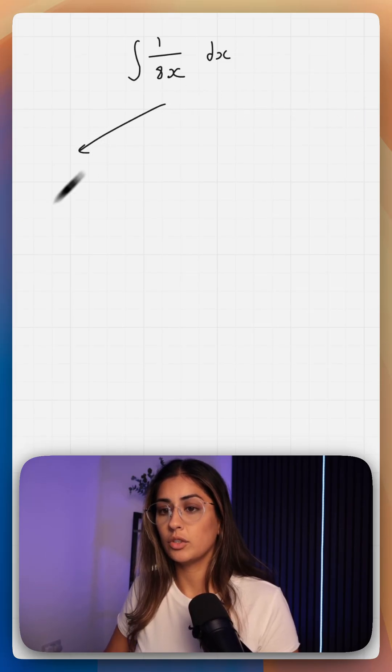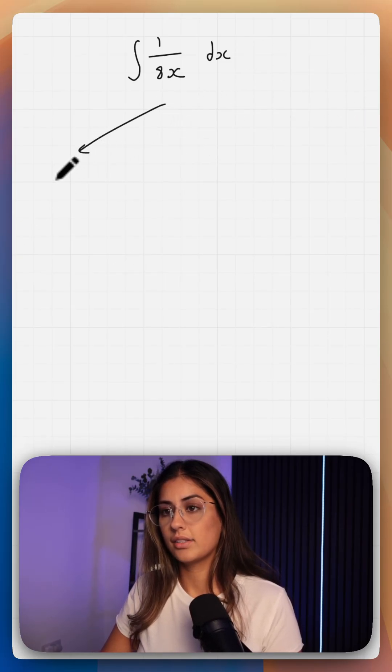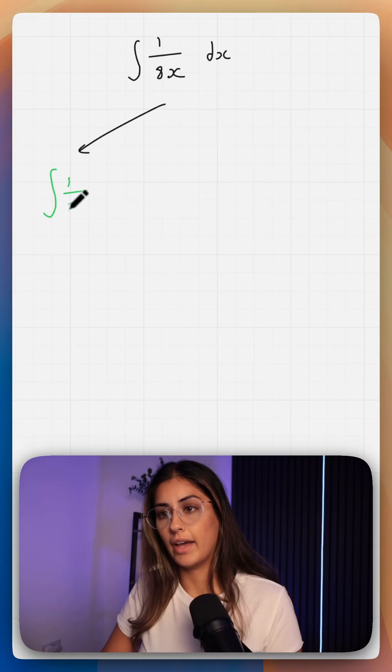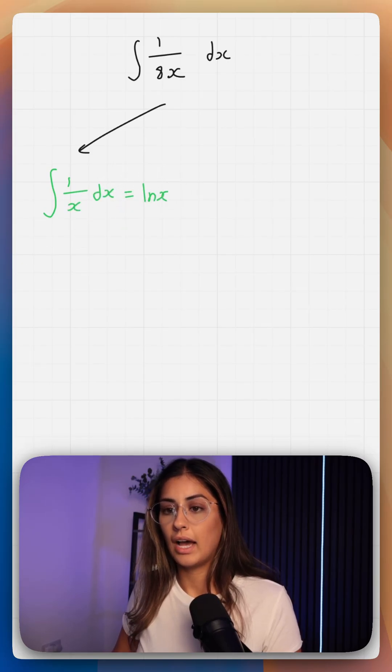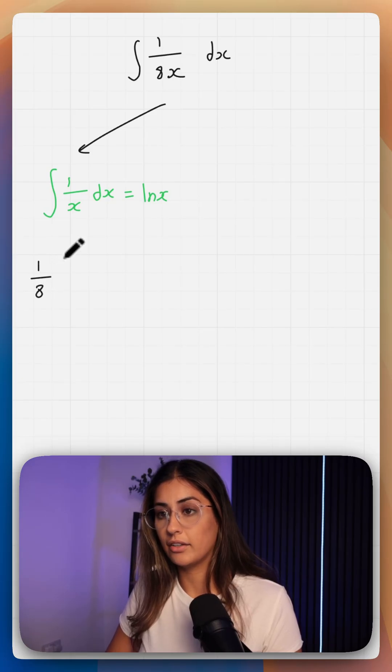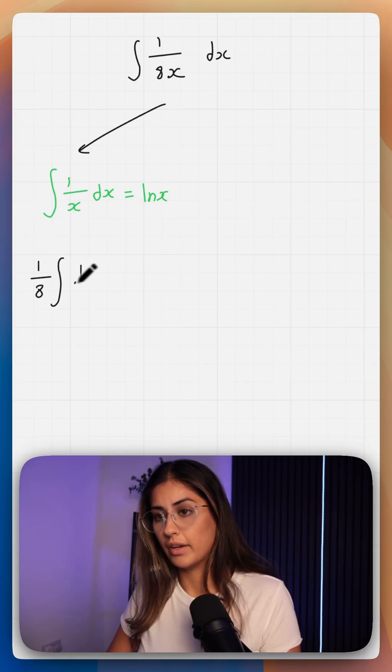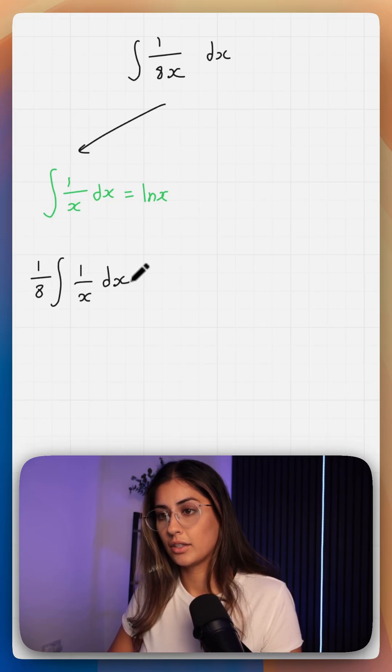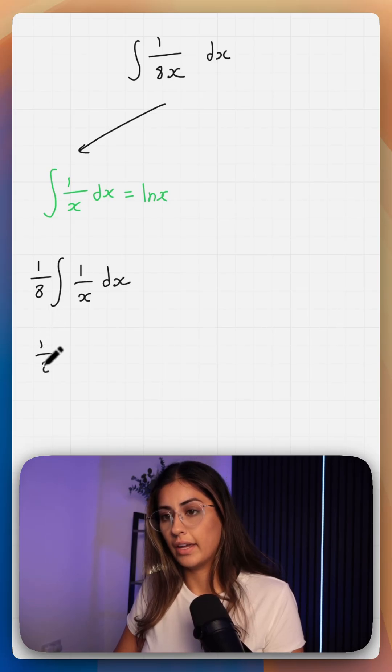The first way is using the general rule that the integral of 1 over x dx is equal to ln of x. In this way you could write the 8 outside of your integral and you've got 1 over x dx, which will then give you 1 over 8 ln of x plus c.